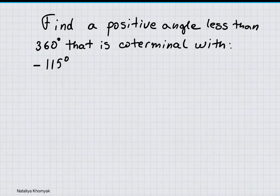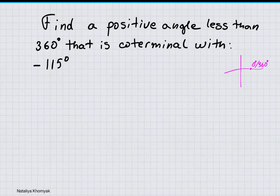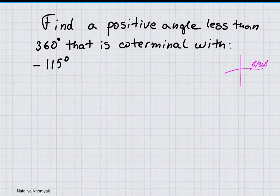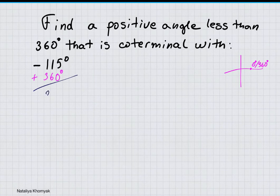Here we have to find a positive angle less than 360 degrees that is coterminal with negative 115 degrees. The goal is to have an angle between 0 and 360 degrees. Since every 360 degrees angles repeat, I can add or subtract 360 degrees to get my answer. Since we are starting with a negative value, I will add 360 degrees: negative 115 plus 360 equals 245 degrees. Since 245 degrees lies between 0 and 360, this is my answer.